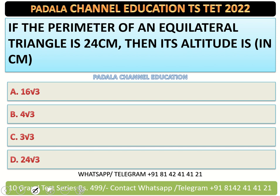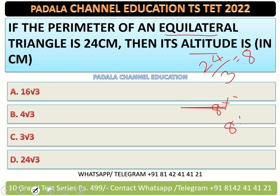If the perimeter of an equilateral triangle is 24 centimeters, then the altitude or height is? Since it's equilateral, each side equals 24 divided by 3, which is 8 centimeters. The altitude of an equilateral triangle equals side times root 3 by 2, which gives 4 root 3.